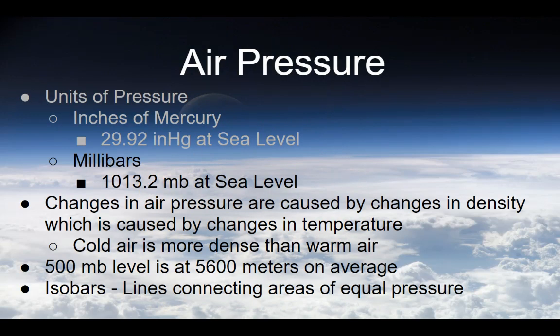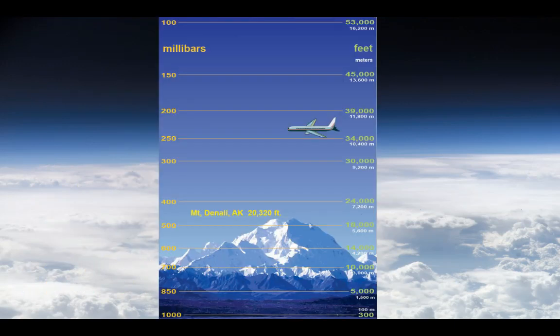Air pressure can be measured in inches of mercury — about 29.92 inches of mercury at sea level — or in millibars. Standard sea level pressure is 1,013.2 millibars. At the surface you can see about 1,000 millibars, and as you go higher up, you have the 850 millibar area, the 700 millibar area, and so on.